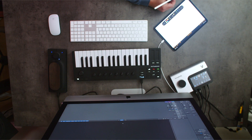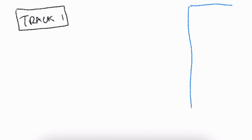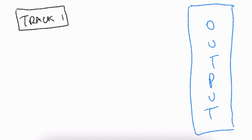Let's take a really basic example. Imagine we've got a setup like Logic's Arrange page, where we've got our first track at the top — I'm going to call that track one. On the right-hand side is an output track, and most of the time when we set up a new track within Logic, that track is simply connected to the output track.